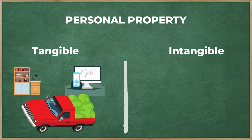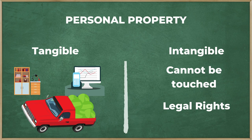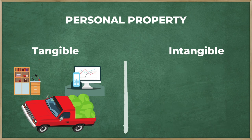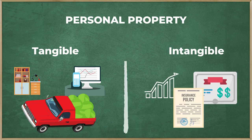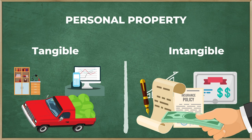Intangible property is any personal item you cannot touch. The intangibles are all about legal rights. They are created to define a property that you own, but it is not specifically a physical thing. Here are a few possible legal rights properties you may have: stocks, bonds, intellectual property, insurance policies, franchises, and money. Money is the closest example of intangibles that we can all relate to.